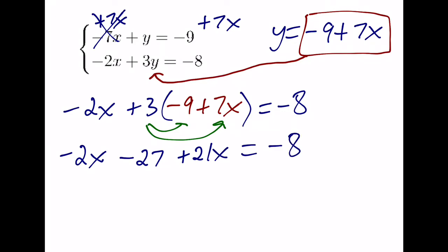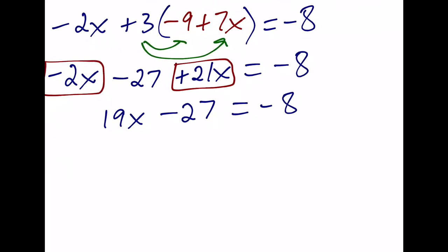When we combine like terms, the negative 2x and the positive 21x are the same term. So this becomes 19x minus 27 is equal to negative 8. And now we're at a two-step equation. So we can add 27 to both sides. This gives us 19x is equal to 19, and we know that x is equal to 1.